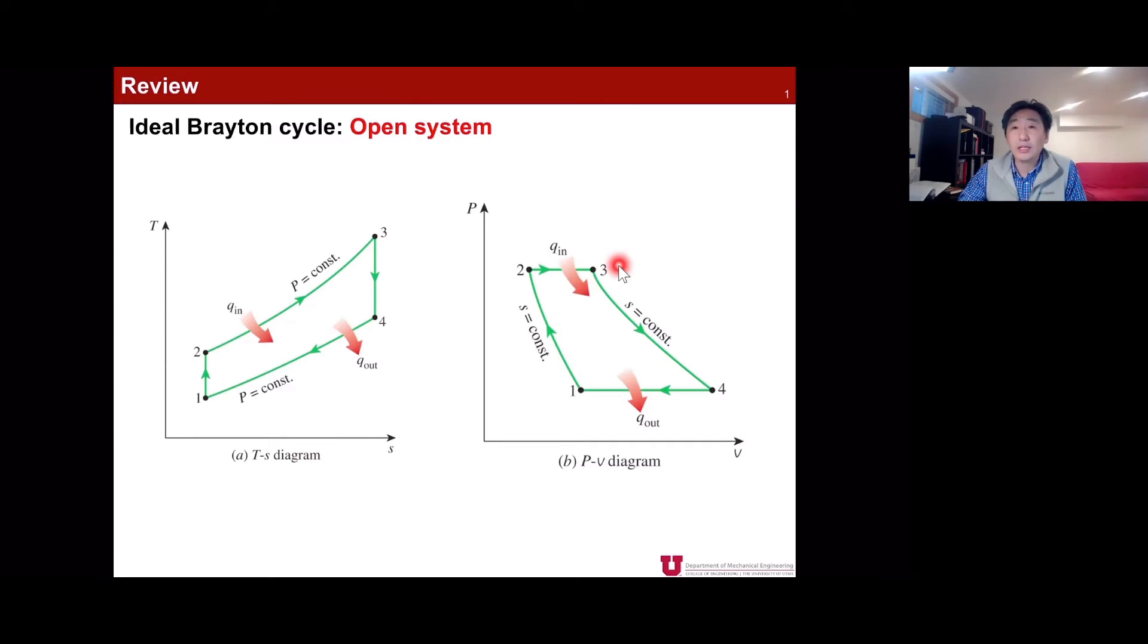What matters more in the ideal Brayton cycle analysis is the TS diagram. We also learned the graphical representation of net work in the ideal Brayton cycle, which is basically the area surrounded by four processes. So that is your net work. Then how did you learn about calculating the net work?